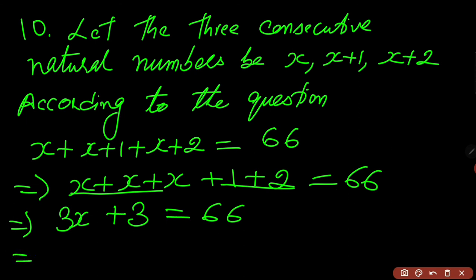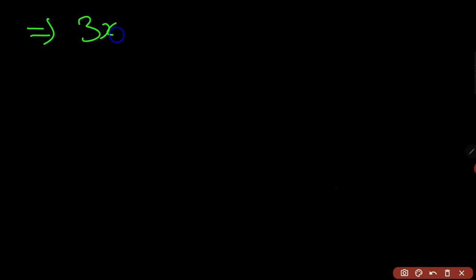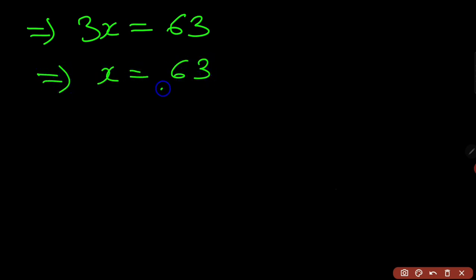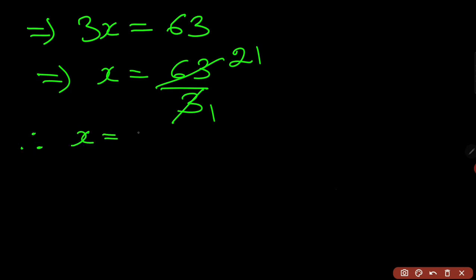Then I can write 3x equals to 66 minus 3. Further solving it, I will get 3x equals to 63. Hence x equals to 63 upon 3. We can cancel these: 3 goes 1 time into 3 and 3 goes into 63 giving 21. Therefore x equals to 21.